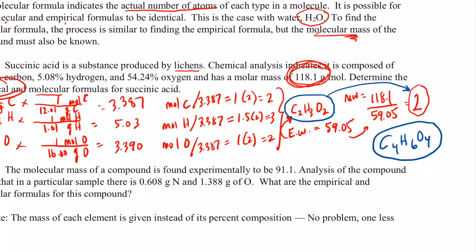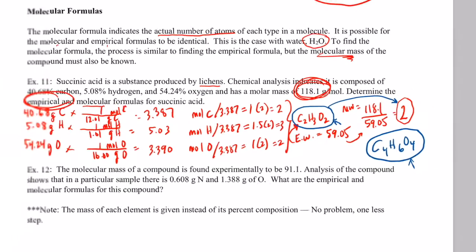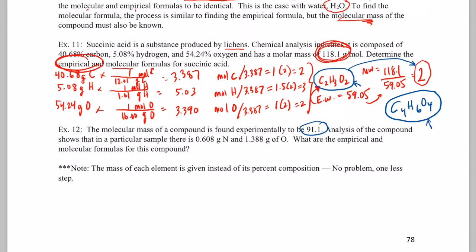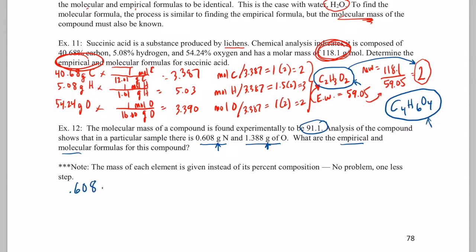So 118.1 divided by 59.05 is exactly 2, meaning the molecular compound is twice as big as the empirical compound. Since the empirical formula is C₂H₃O₂, doubling gives us C₄H₆O₄ — that's the molecular formula. Notice: the empirical is the lowest whole number ratio; the molecular is the actual ratio. Now let's try Example 12. This time the molecular weight is 91.1, and the compound is given as 0.608 grams of nitrogen and 1.388 grams of oxygen — I want the empirical and molecular formulas. I didn't give you percent by weight this time, but I did give you the mass of each element directly.